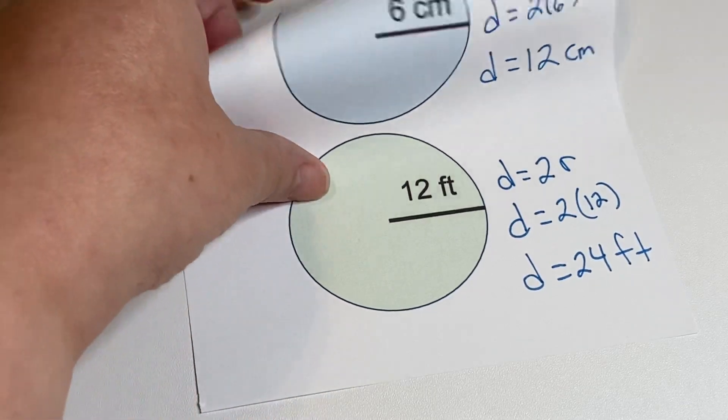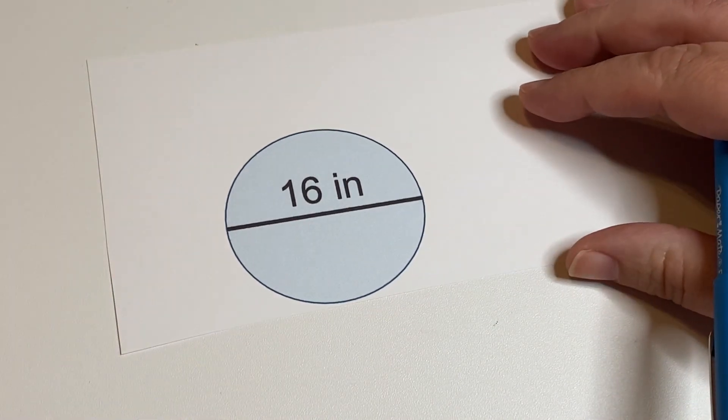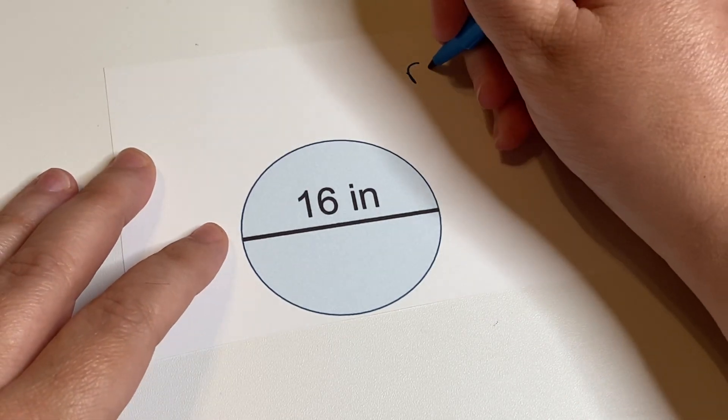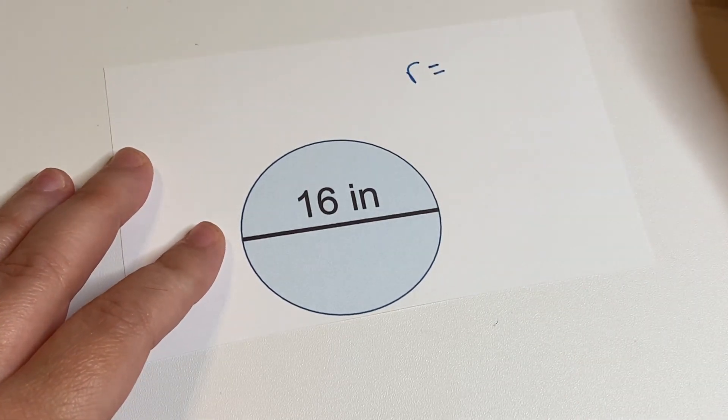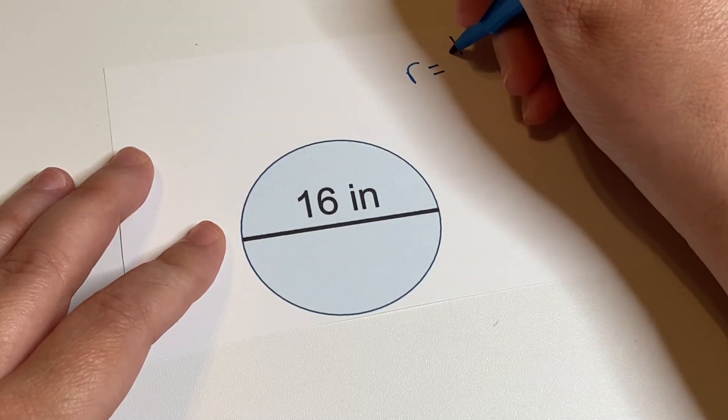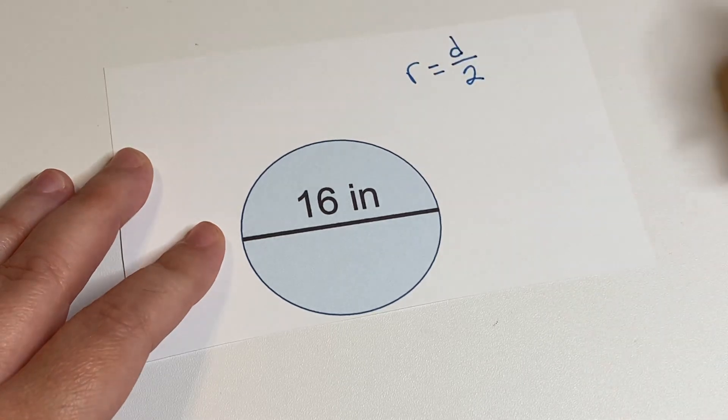Okay now what if you're given the diameter and you need to find the radius. So you need to go the opposite direction. So we're looking for the radius. We're going to call that r. And what would I do? Well I would cut it in half. So I would take the diameter d and I would cut it in half which means divide by two.